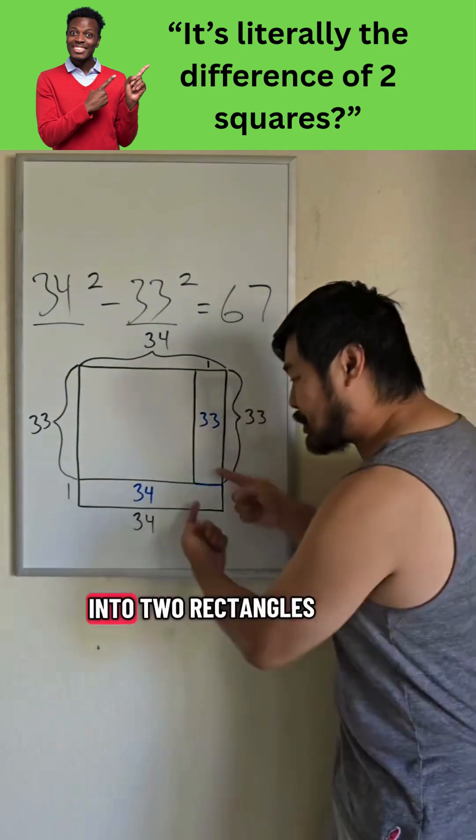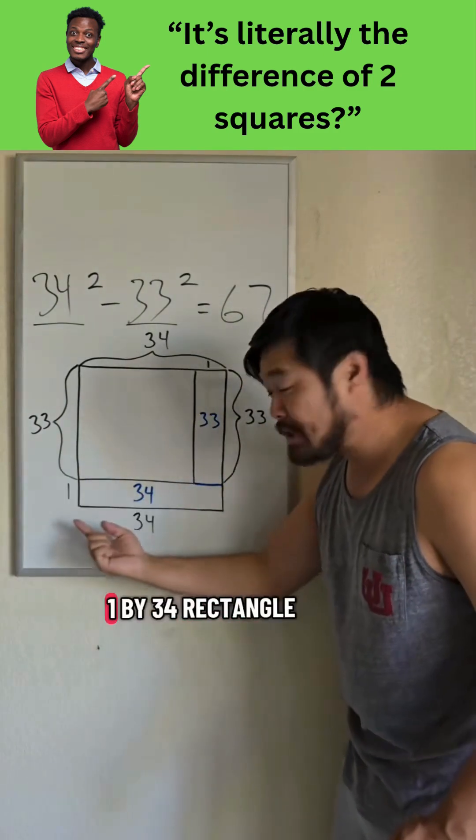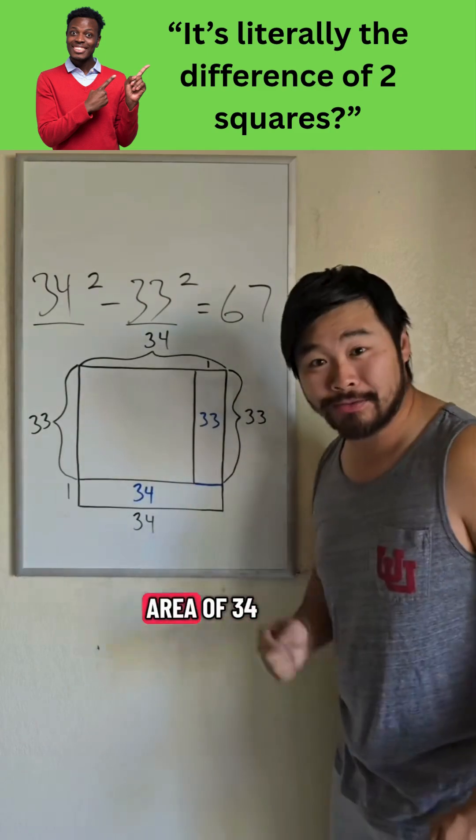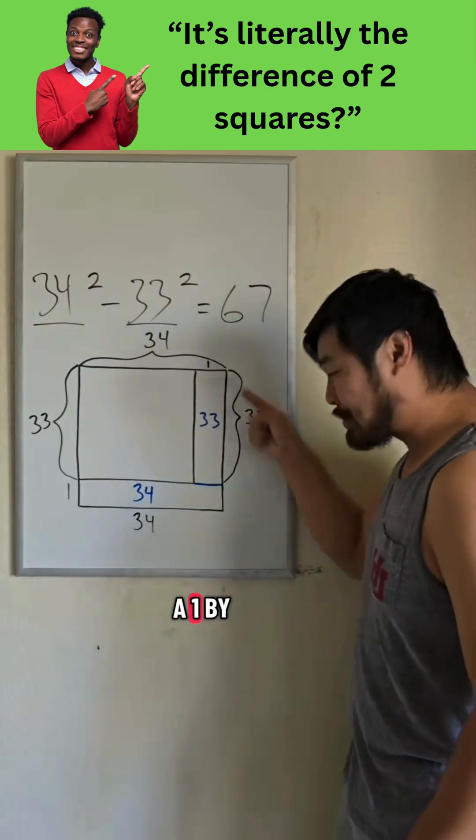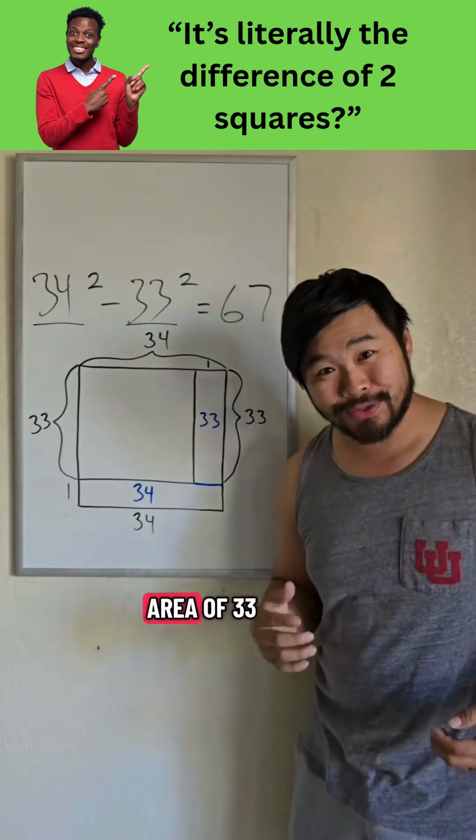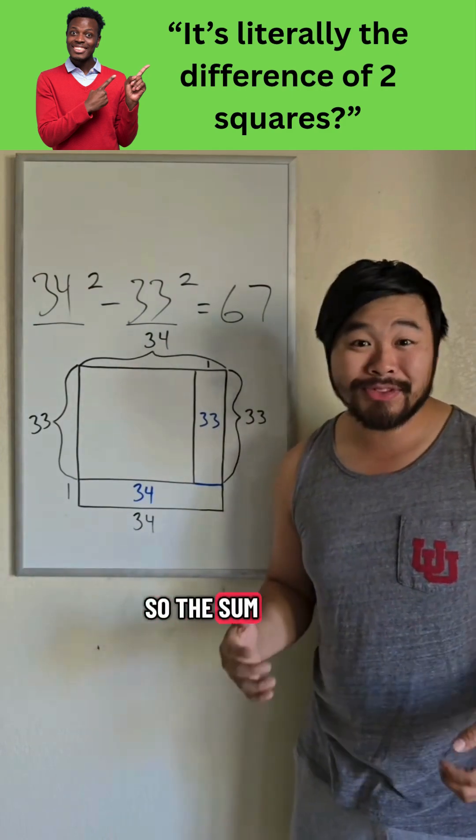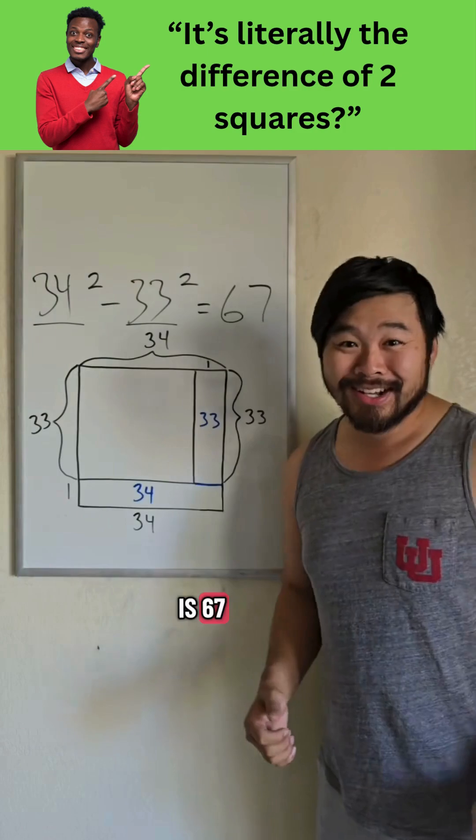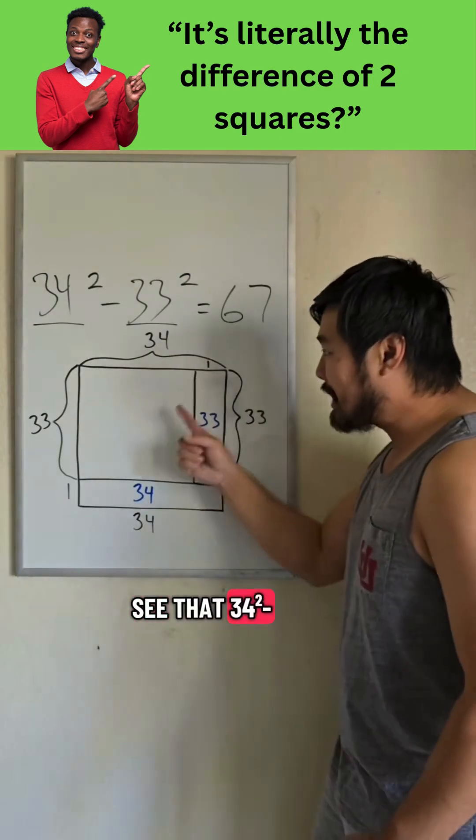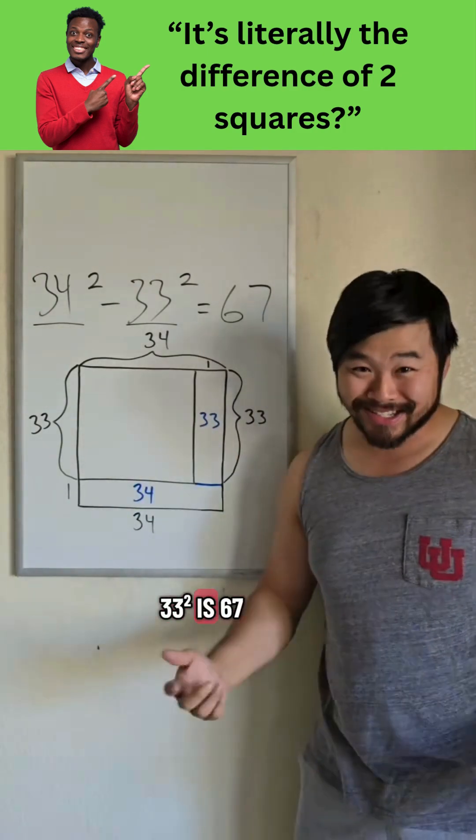So we could break the shape into two rectangles. We have a 1 by 34 rectangle, which has an area of 34. And we have a 1 by 33 rectangle, which has an area of 33. So the sum of these areas is 67. So we can see that 34 squared minus 33 squared is 67.